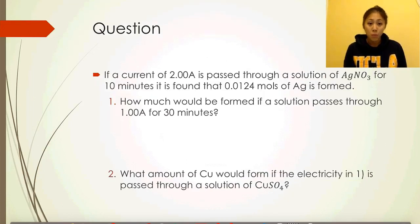Let's try another problem asking about how much would be formed if a solution passes through 1 amp for 30 minutes of silver nitrate. If in any case you need help with the equations, remember to flip back to the beginning of this presentation, where there was a slide of all the equations that you'll need to calculate any form of electrolytic cell problems.